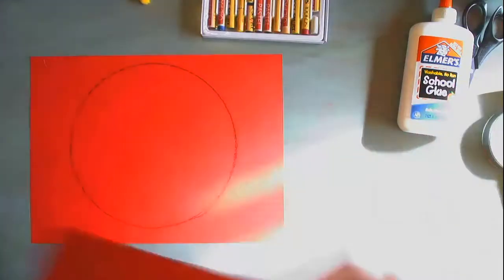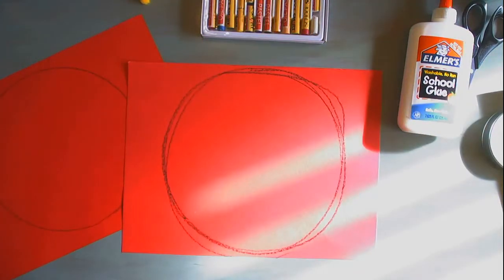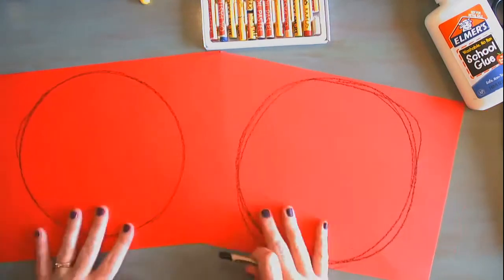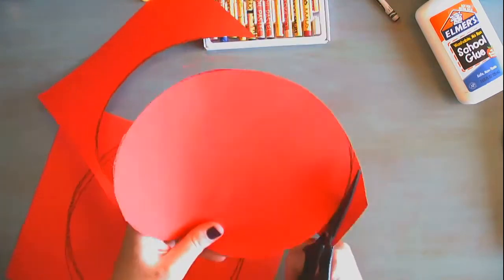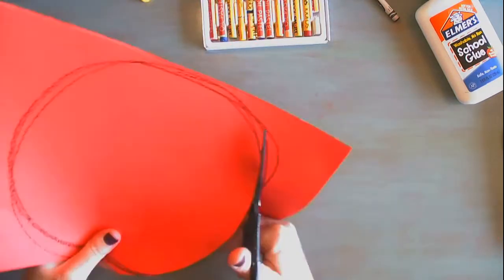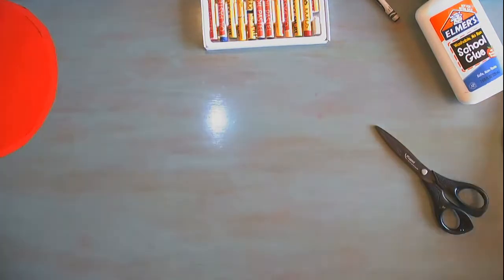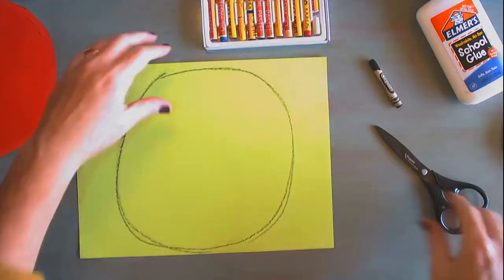Now the first thing I'm going to do is trace a circle or draw a circle onto the red paper and then I'm going to cut out those circles. It doesn't have to be perfect. Put those to the side and now repeat the same process with your green paper.